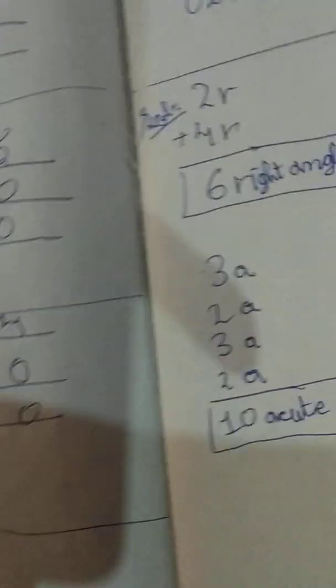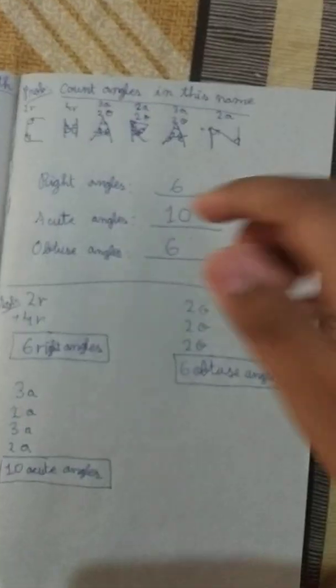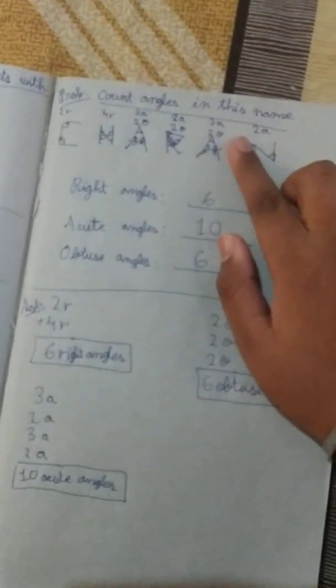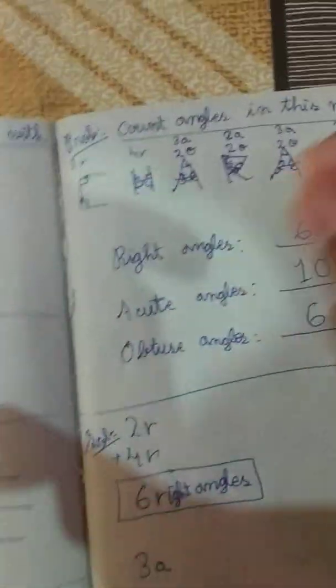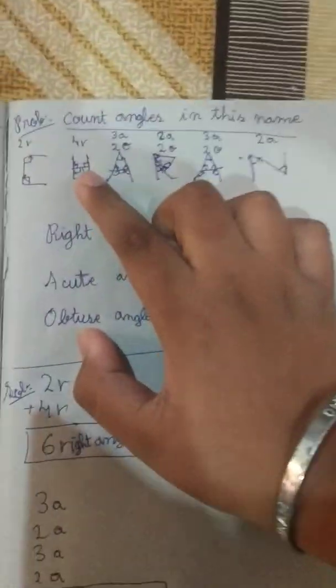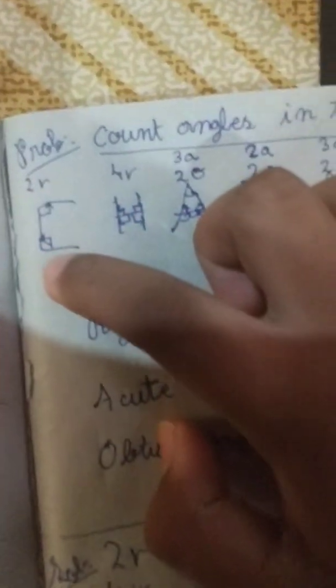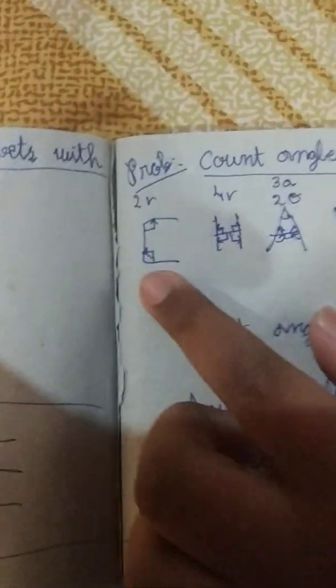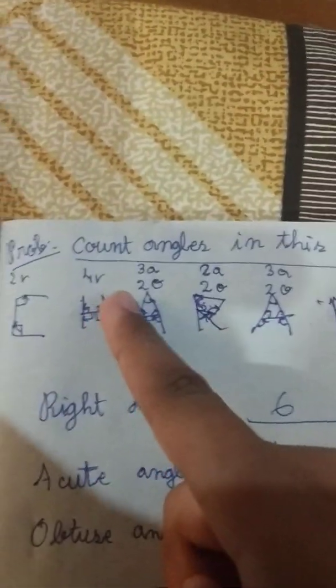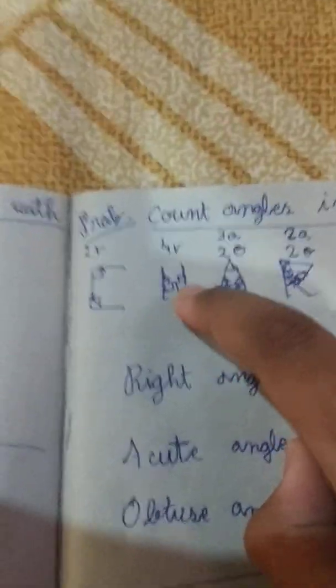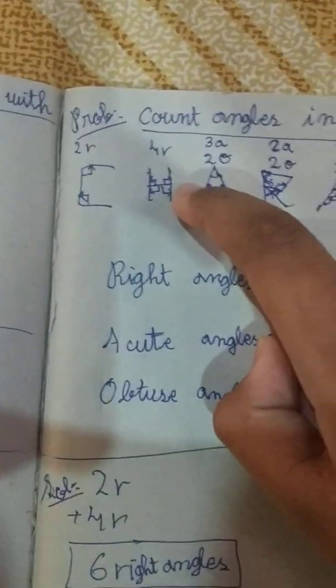Now let's see another problem. Count angles in this name — that is the name Charen. First we have to know in every letter; we have to count one by one. First see the C: one right angle and another right angle, so two right angles. For right angle I have written R, for acute angle A, and for obtuse angle O, to find easily. And H also has 4 R, means 4 right angles — one, two, three, and four right angles.